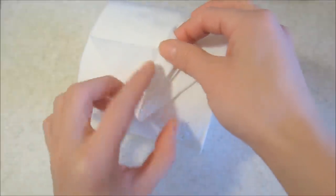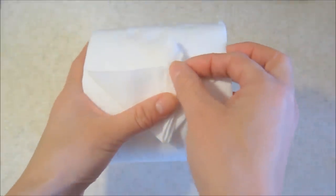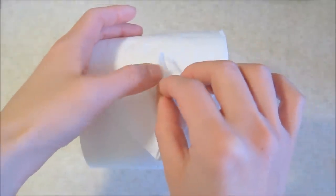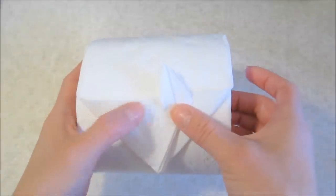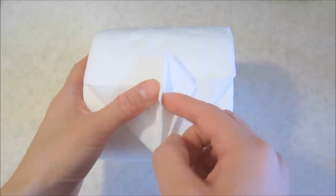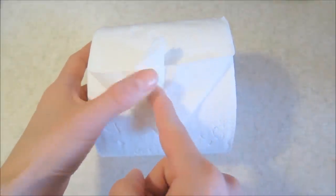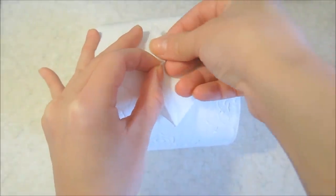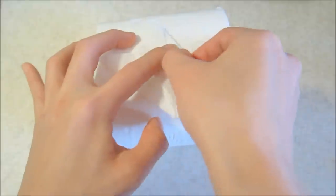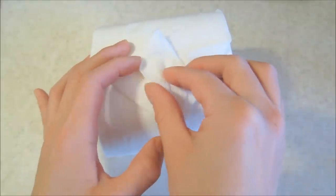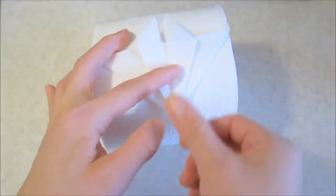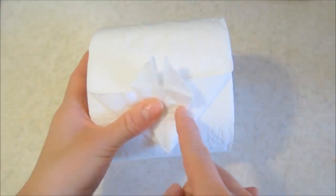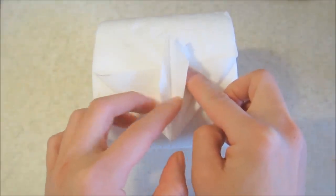Now we're going to take this flap over here and fold it diagonally to the center crease right here. Once we've done that, we're going to fold it over and repeat the same thing on the right side. Now the center should look like this and there should be two flaps on both sides, two here and two here.